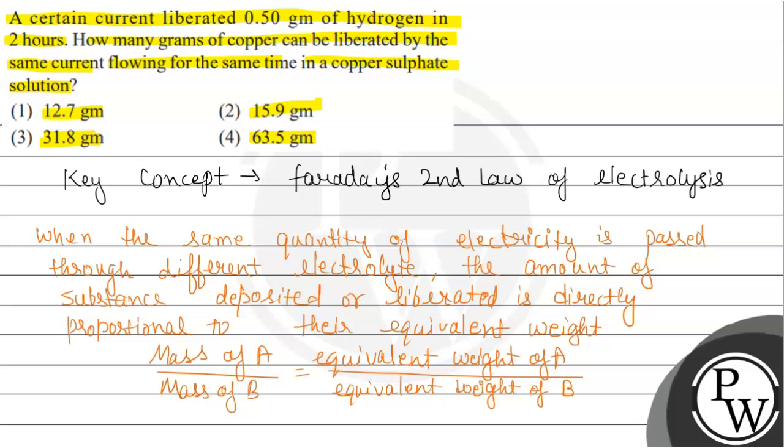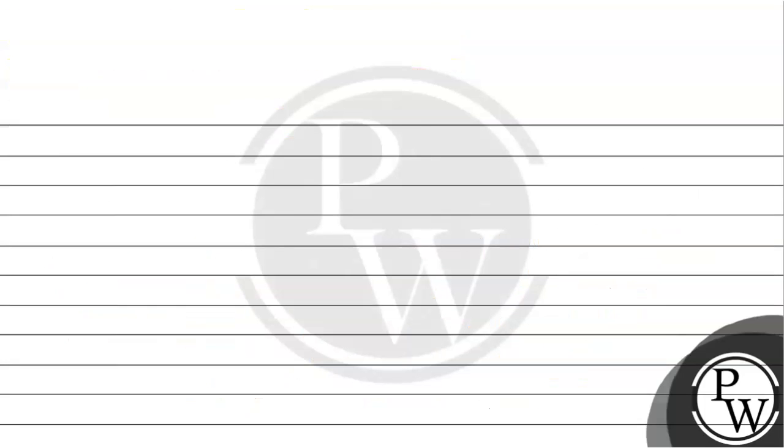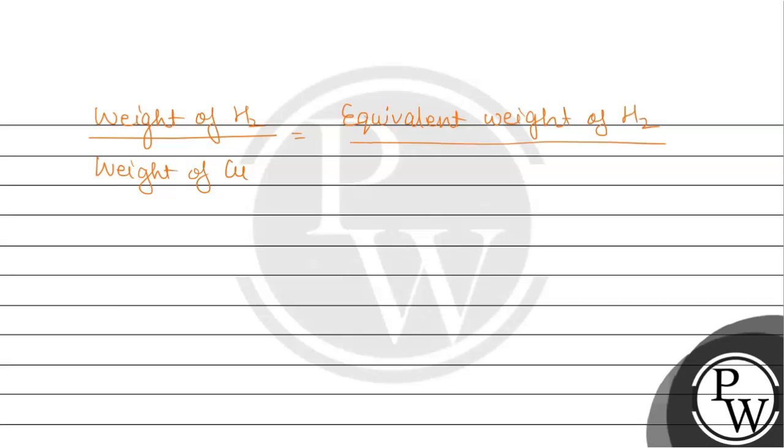According to the equation for hydrogen and copper, for which they have given same amount of current and same time, the equation will be: weight of hydrogen divided by weight of copper is equal to the equivalent weight of hydrogen divided by equivalent weight of copper.